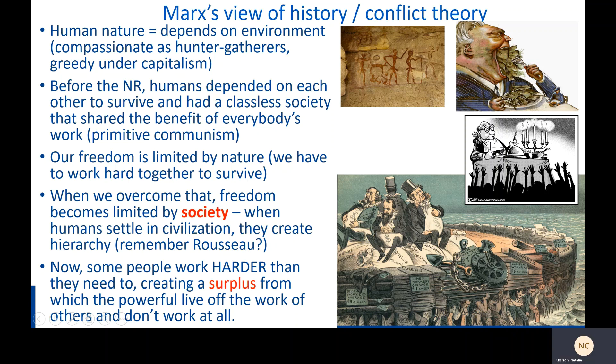So here's how Marx thinks that history works. Following our Enlightenment pattern of starting with human nature as our source of reasoning for everything about society, Marx thought that human nature depended on the environment. He didn't agree with Hobbes, Locke, or Rousseau necessarily — he didn't think human nature was fixed. He thought it changed depending on circumstances. He thought people were compassionate as hunter-gatherers, for example, and became greedy under capitalism. This means that human nature could change with circumstances too.